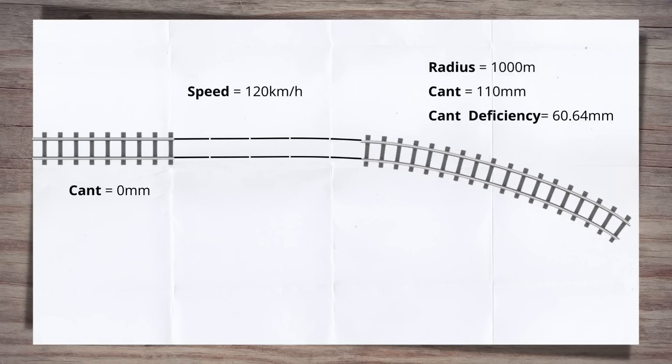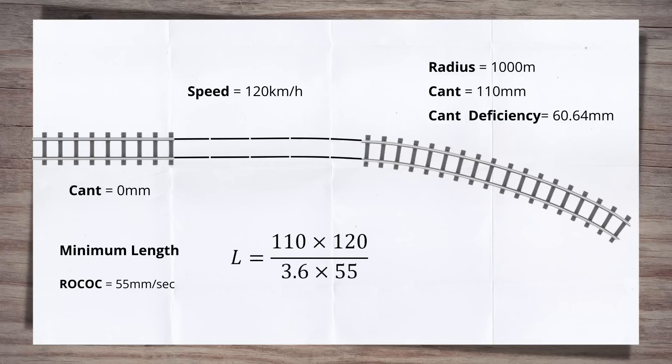Now, let's rerun the calculations, but with the maximum values. This gives us the shortest length the designer can go to while remaining compliant. The process is the same, but the rate of change values are those stated for the maximum. Again, this is nice and easy as they're both 55 millimetres per second. So let's sub in our values for cant, and this gives us 66.6 metres.